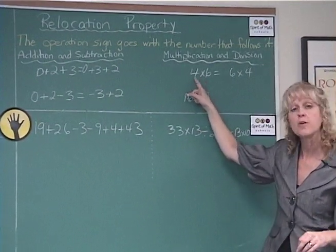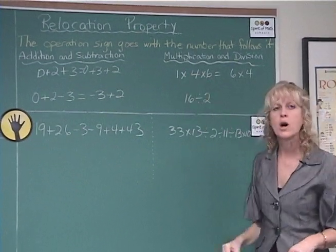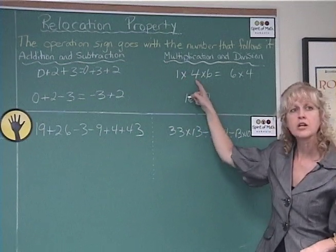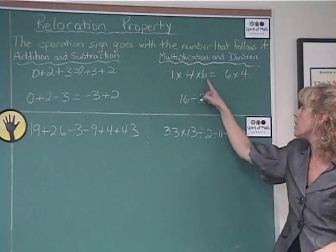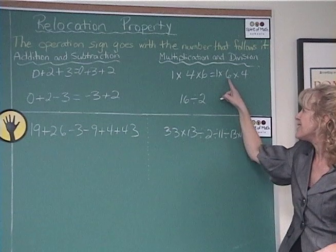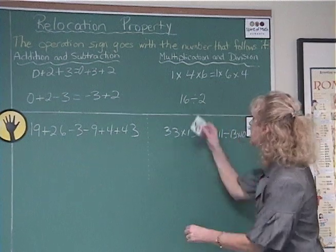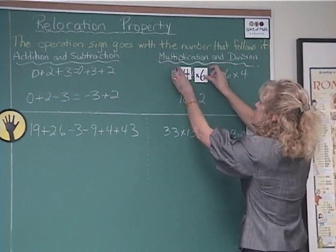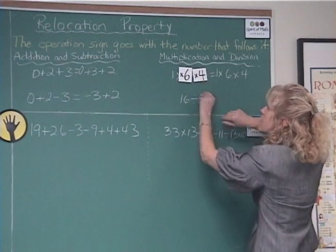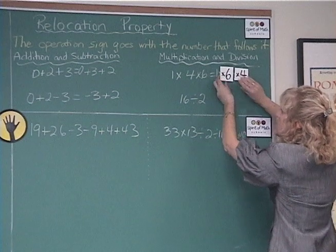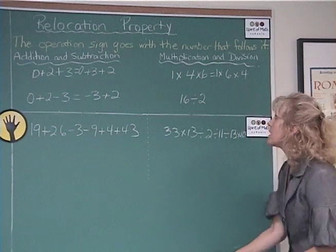And this time, the identity element for multiplication, because this is a multiplication question, and that is 1. 1 times this expression does not change the value of that expression. So you've got 1 times 4 times 6, which is 24. And again, if you leave that 1 times in front, you don't really have to write that, but you could. And what's really effectively happened is that you've got the 1 times 4 times 6, and you've switched it around equals 1 times 6 times 4, which is over on this side. So the relocation property works for multiplication as well.